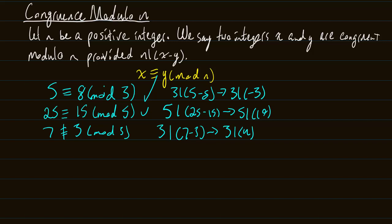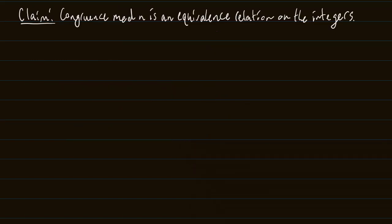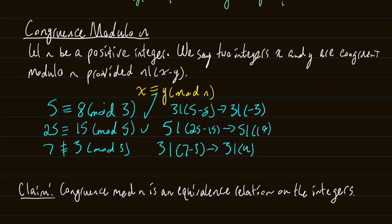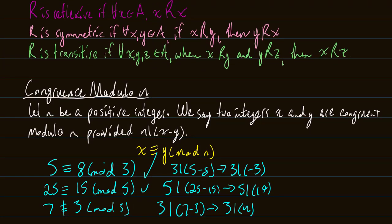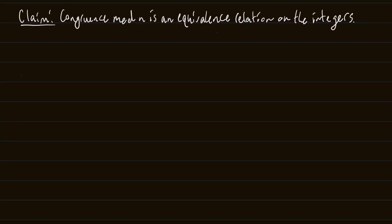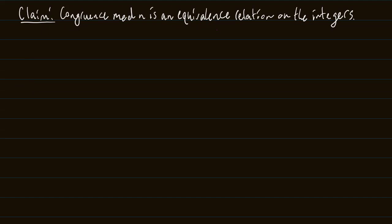You might be wondering why we're talking about equivalence relations and now congruence modulo N. The reason is that congruence mod N is actually an equivalence relation, but you shouldn't just trust me on that — I should prove it to you, and that's what I'm going to do right now. To prove this, we need to show that congruence mod N has the three properties: reflexive, symmetric, and transitive. I'd encourage you to pause the video and try to figure it out for yourself first.